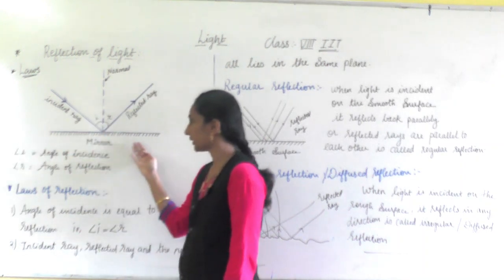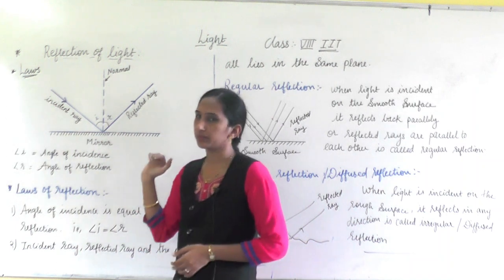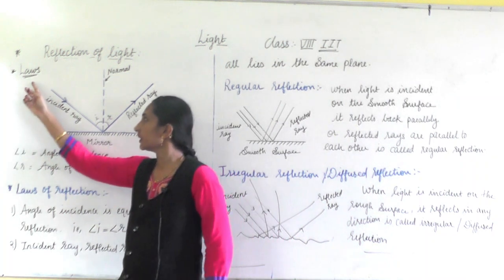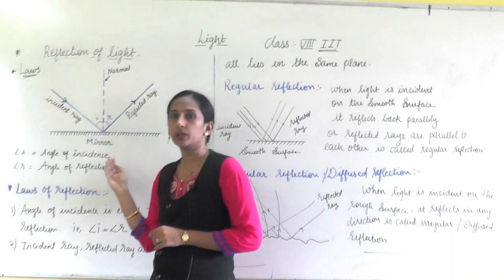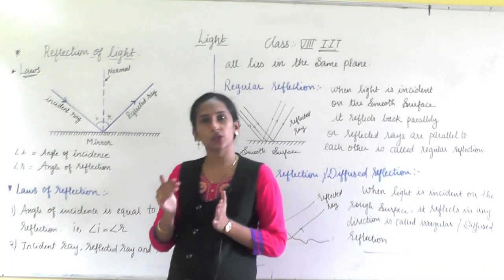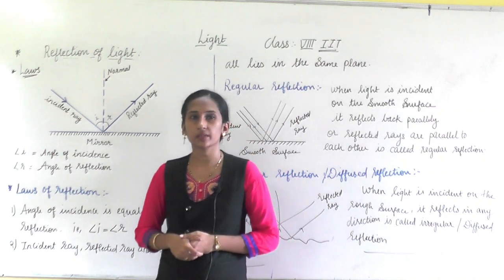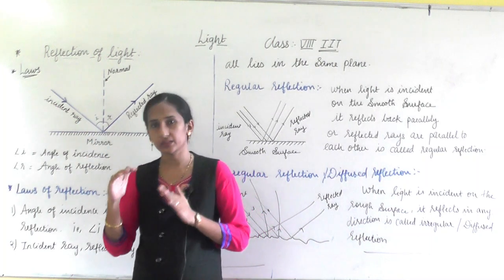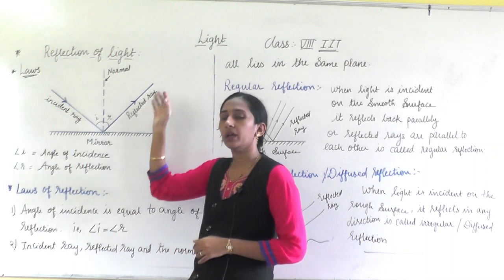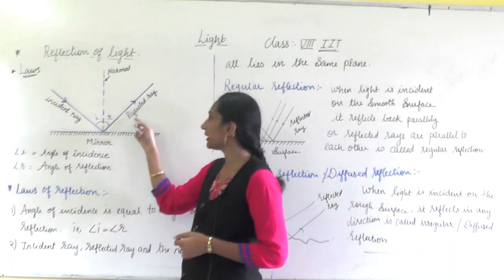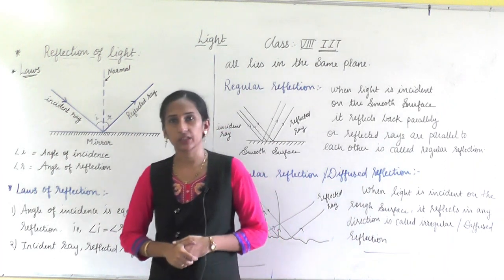Looking at the diagram, you can see a mirror — the shaded part is the back of the mirror, and the front reflective part faces outward. The ray of light that falls on the mirror or any material is called the incident ray. When this incident ray falls on the material, it reflects back, and the ray that reflects back is called the reflected ray.